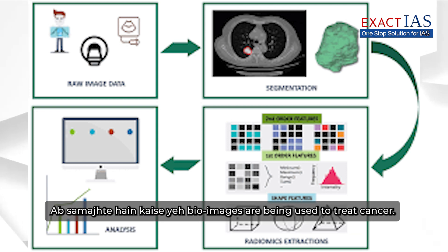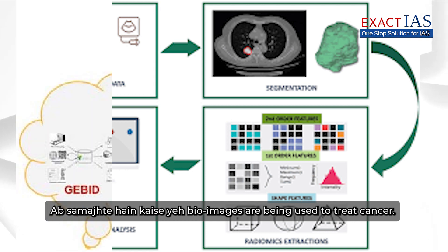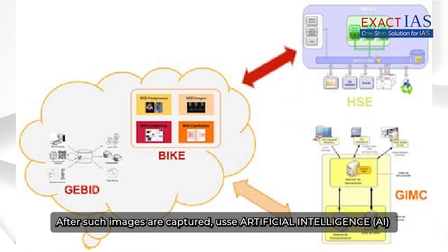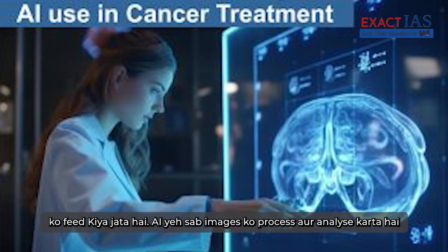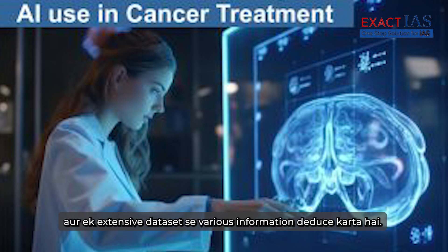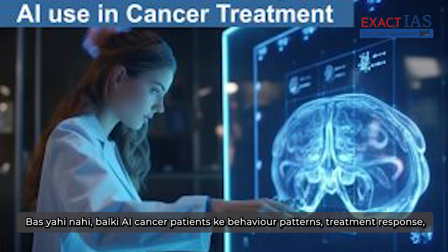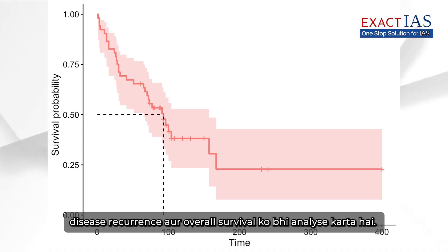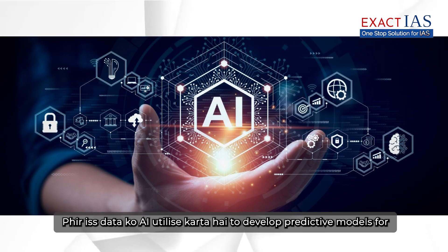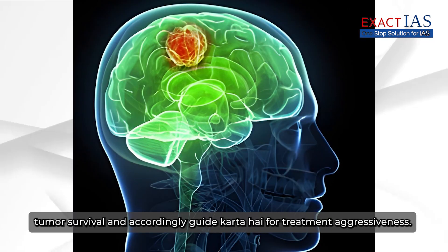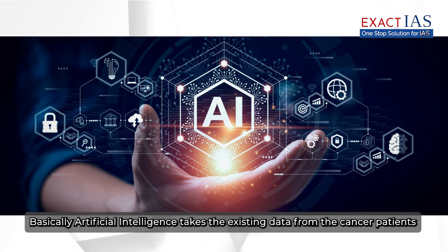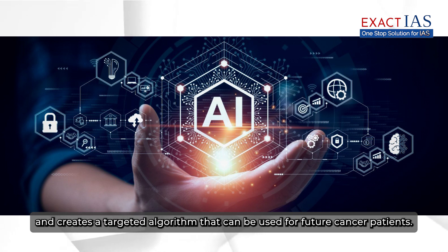These bioimages are fed into artificial intelligence. AI processes and analyzes all these images and deduces various information from an extensive dataset. AI also analyzes cancer patients' behavioral patterns, treatment response, disease recurrence, and overall survival. This data is then utilized by AI to develop predictive models for tumor survival and to accordingly guide treatment aggressiveness. Essentially, AI takes existing data from cancer patients and creates a targeted algorithm that can be used for future cancer patients.